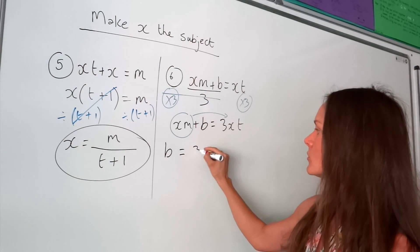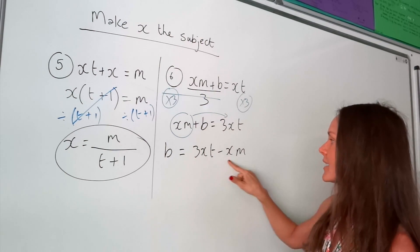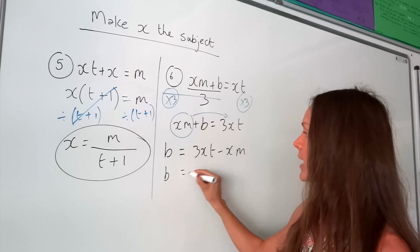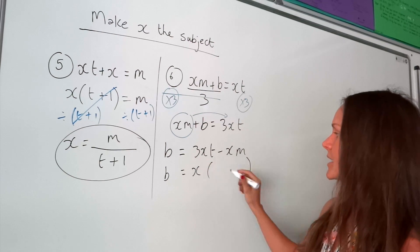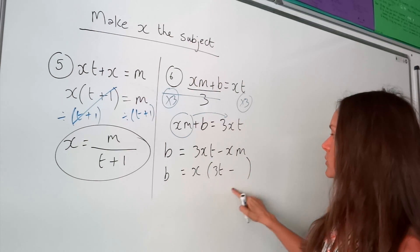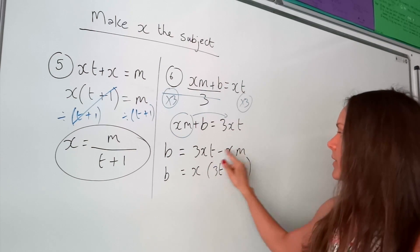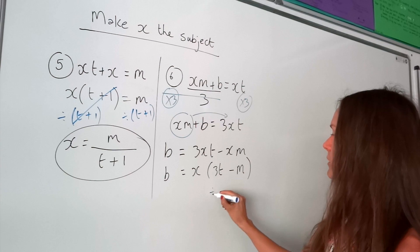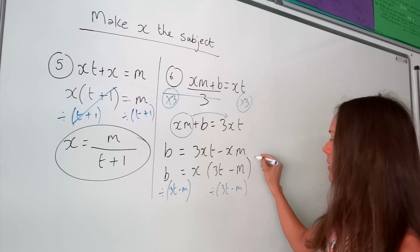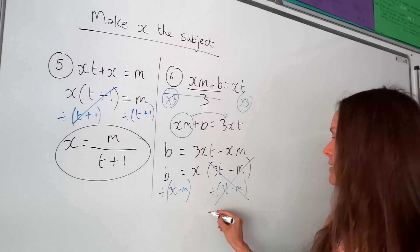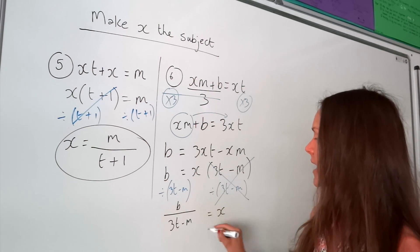So the b is left over, then we have the equal sign, then minus xm. Now to isolate x, you need to factorize — factor out that x on the right-hand side and put everything else into brackets. x multiplied by something gives me 3xt, so that's 3t. Then I've got my minus — x multiplied by something gives me xm, which must be m. The final step: the opposite of multiplying x by that bracket is to divide. So divide by (3t minus m) on both sides. On the right-hand side, dividing by itself gives 1, leaving 1x. On the left-hand side, remember to write it as a fraction: b divided by (3t minus m).